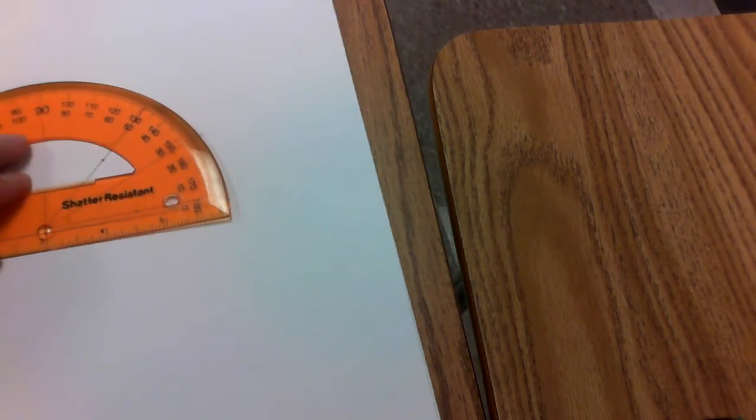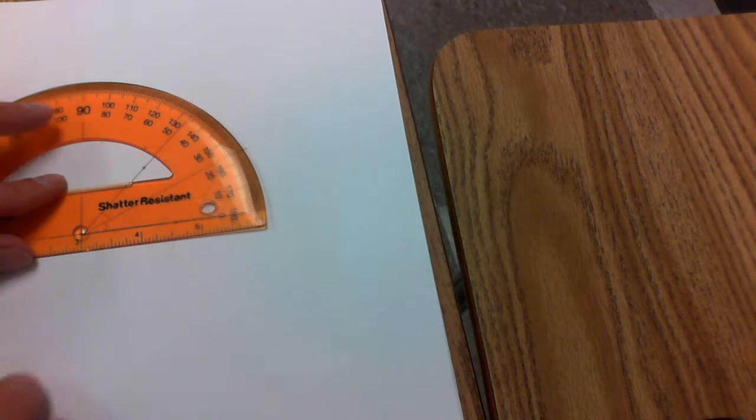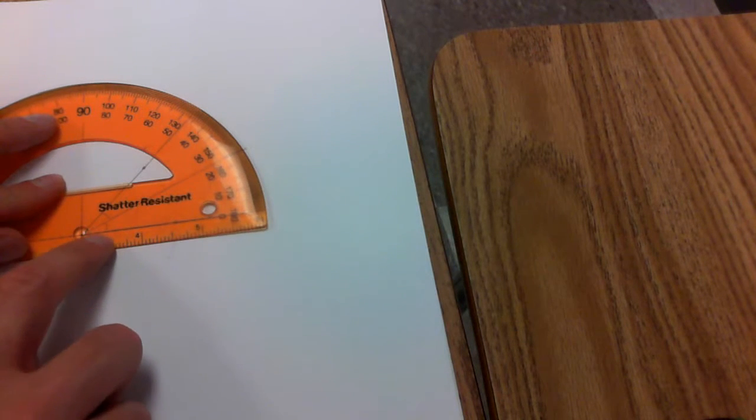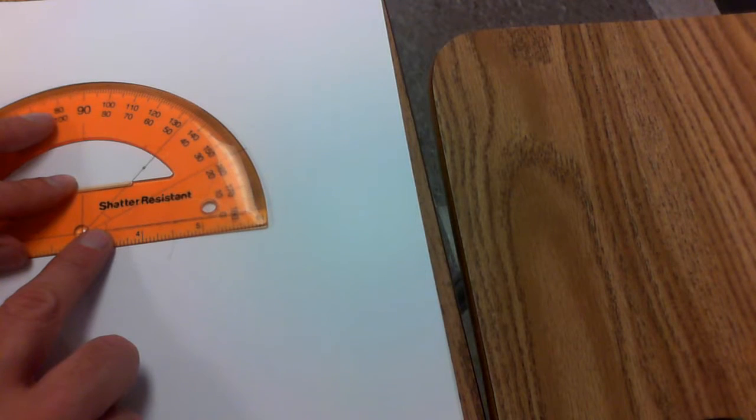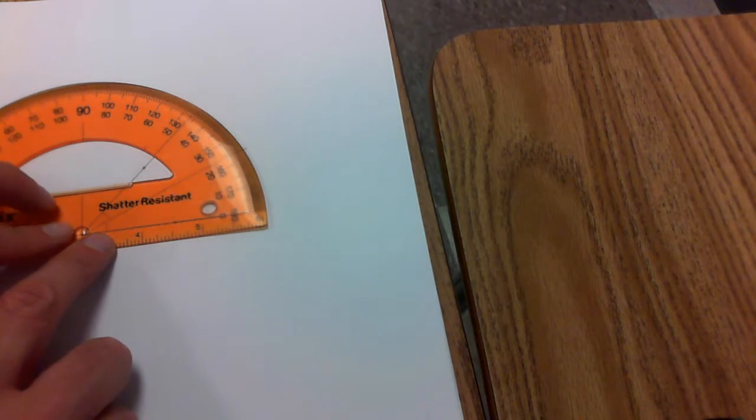So you notice that I'm going to move my crosshair right to where my vertex is, and you'll notice that the line of my angle I'm going to line up right on with the arm of my angle.